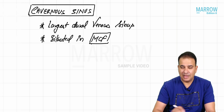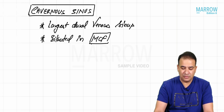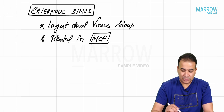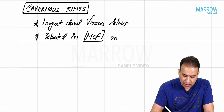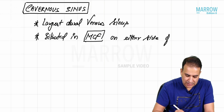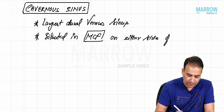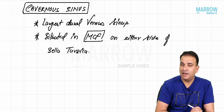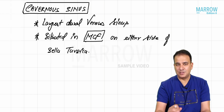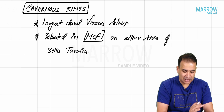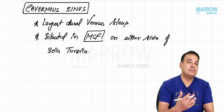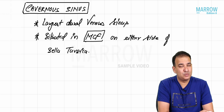The cavernous sinus is situated in the middle cranial fossa on either side of the sella turcica, or pituitary fossa. To understand its incoming and outgoing channels and everything, let's discuss those channels first, and then we'll discuss the relations of the cavernous sinus, which are very important.